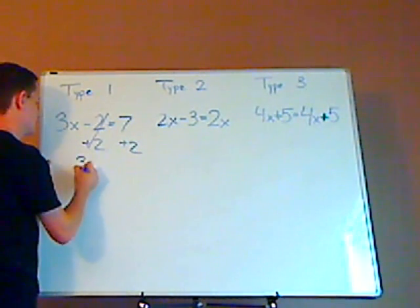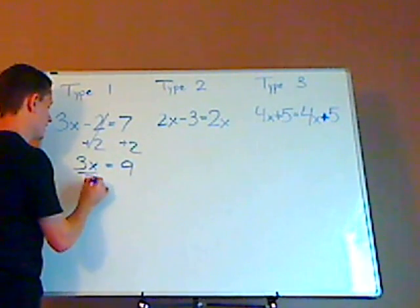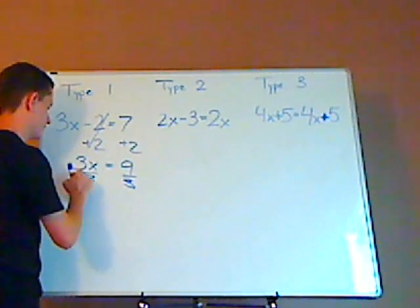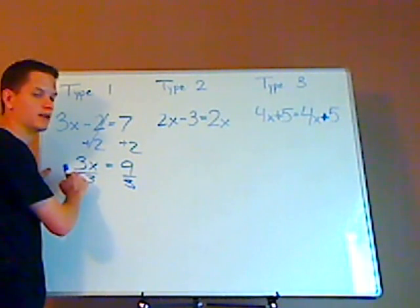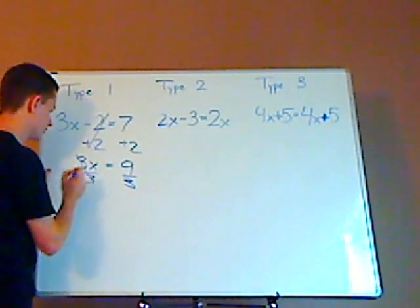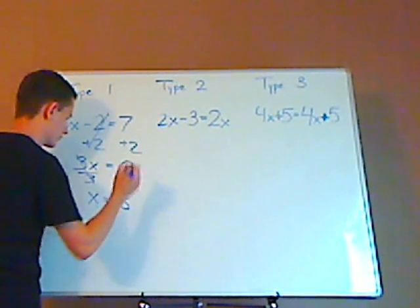that cancels, that leaves you with three x equals nine. Divide both sides by three, because the opposite of multiplication is division. Whenever you have a number right next to a variable, it's multiplication. So that cancels, and nine over three is three.